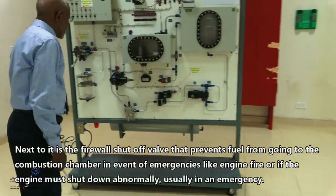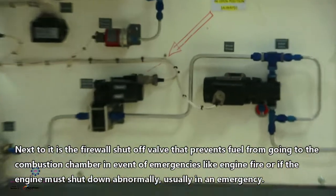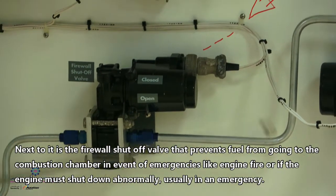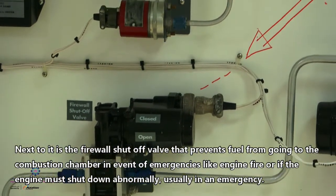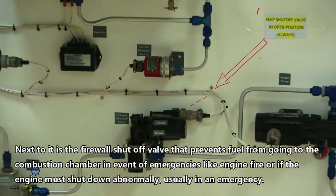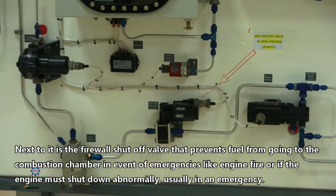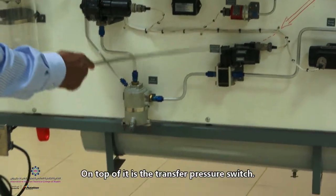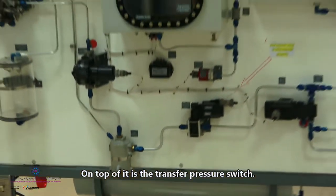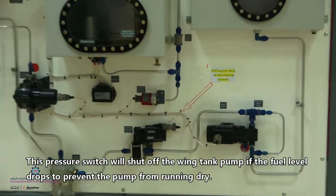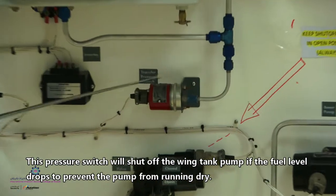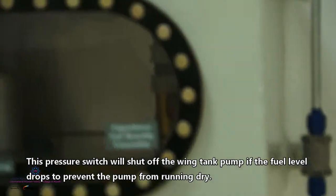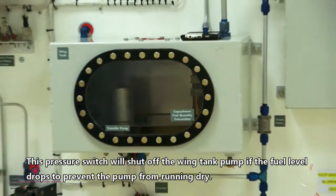Next to it, we have a fire shutoff valve. This is the firewall. The shutoff valve is only open and close, which is between the pump and the strainer, to cut off any fuel going to the combustion chamber or let it go, which is same like a gate. And then at the top of it, you can see the transfer pressure switch. This pressure switch will help out in case the fuel and the quantity of the fuel in the wing tank drops. Then the switch will turn the pump off to avoid burning it out.